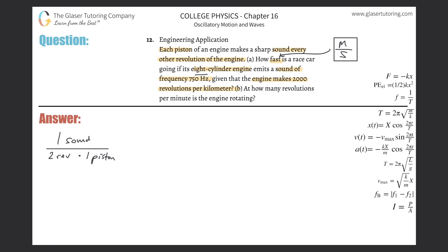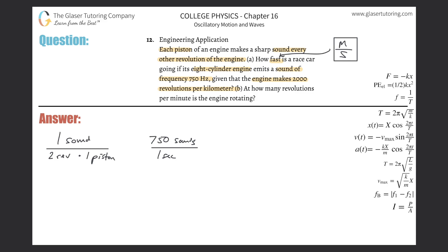The engine emits a sound of frequency 750 hertz. Frequency is the number of things happening per second, so this tells us there are 750 sounds produced every single second per engine. We write: 750 sounds per one second per single engine.